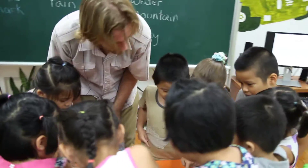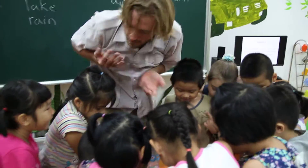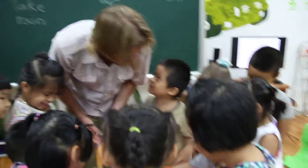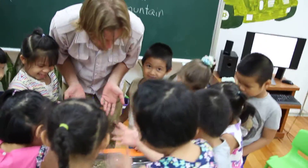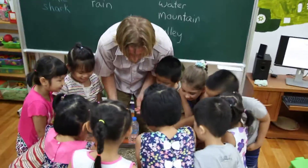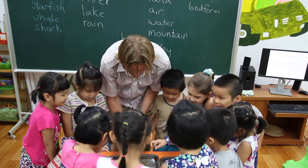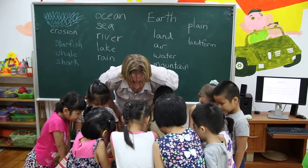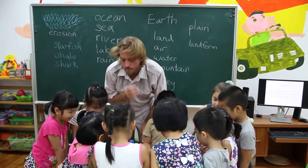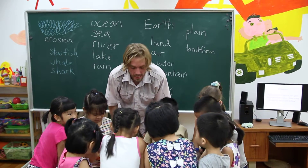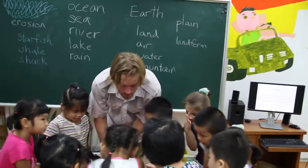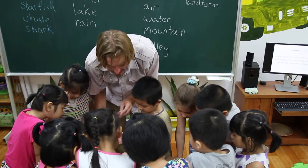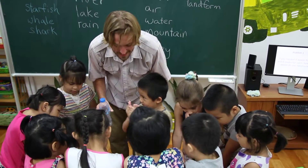How did that happen? What is here? Somebody tell me, how did that happen? It's from the rain. It was from the rain. It was from the water. So, that's called erosion. Erosion is when the water changes the mountain into a valley.